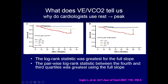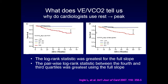Cardiologists then took this further and asked: since there's an abrupt increase in VE/VCO2 from ventilatory compensation point to peak, why not just use rest to ventilatory compensation point? In a 2007 study by Ingle and colleagues, they found that the log-rank statistic was greatest for the full slope — measuring the entire slope better separated sick from less sick patients. This is why when you see a cardiopulmonary exercise test from cardiology, you get one slope number for the entirety of the exercise period.